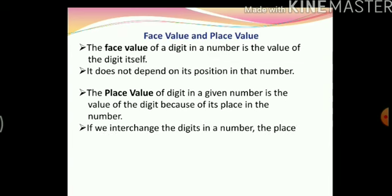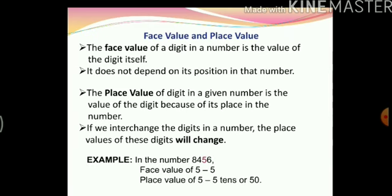If we change the digits in a number, the place value of these digits will change. Let us see an example. In the number 8456, the face value of 5 is 5 and the place value of 5 is 5 tens, or 50.